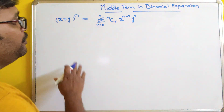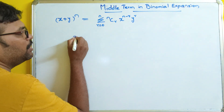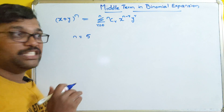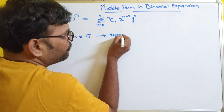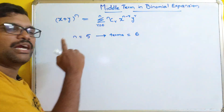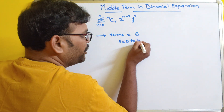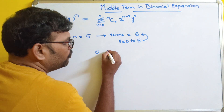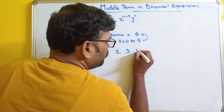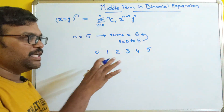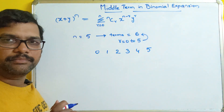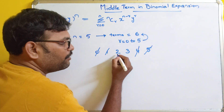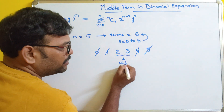For example, if n = 5, how many terms will be in the binomial expansion? The number of terms will be six, because r starts from 0 to 5, giving us six terms: 0, 1, 2, 3, 4, 5. Now among these, which ones are considered the middle terms? We can see there are two middle terms — the third and the fourth terms.